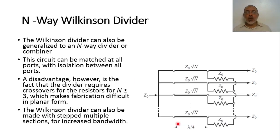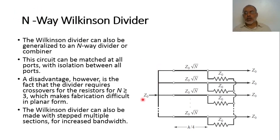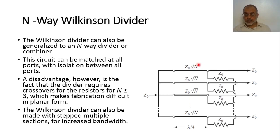The Wilkinson power divider, which we started with two-port power division, can also be generalized to an N-way Wilkinson power divider, such that we can divide the input signal into N ways. In this case, the transmission line sections should have characteristic impedance equal to Z-naught multiplied by the square root of N. If N equals 2, we return to the conventional Wilkinson power divider, with Z-naught connected to Z-naught from each transmission line section.